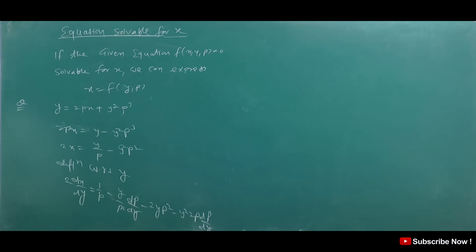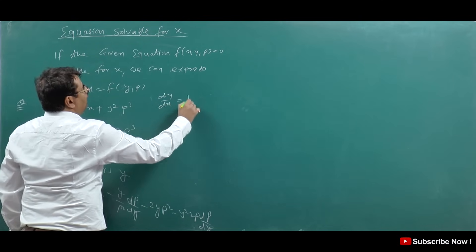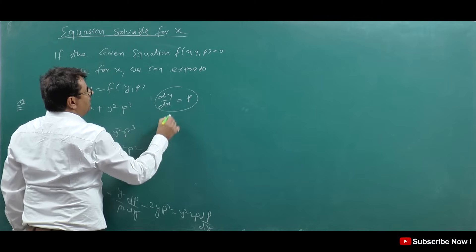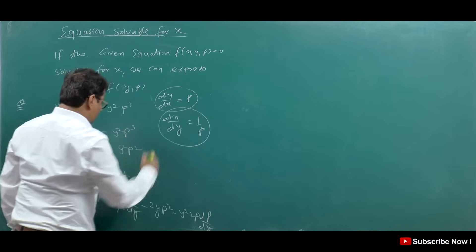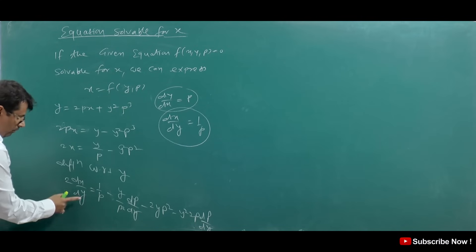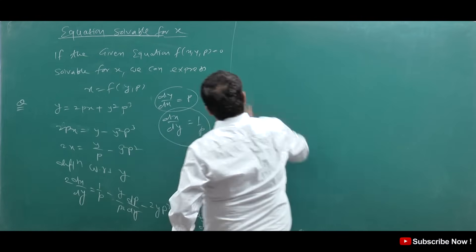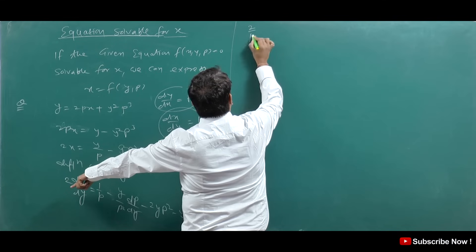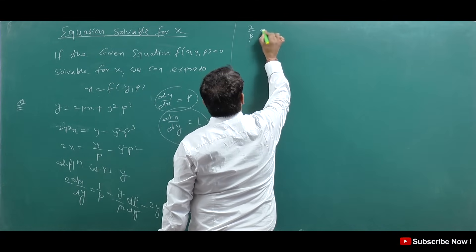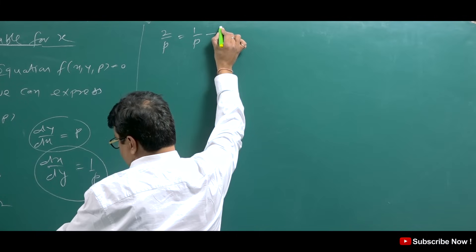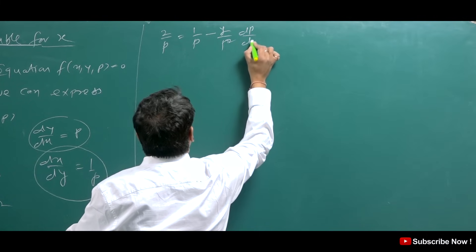Now, let's understand this carefully. We know that DY/DX = P, so DX/DY is its reciprocal, which is 1/P. This is necessary to remember. So DX/DY = 1/P. That equals 1/P minus Y/P² times DP/DY.